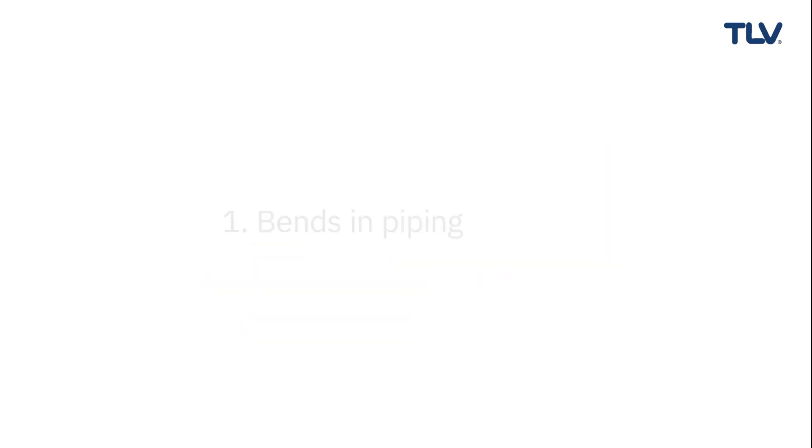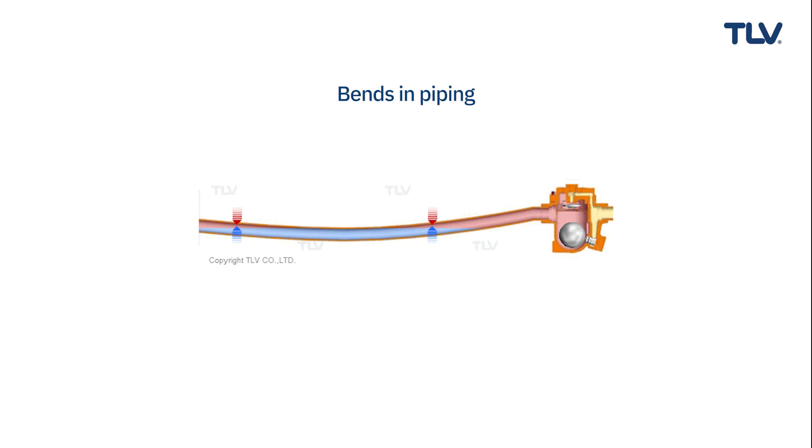There are two other issues to account for when installing trap inlet piping. One is bends in piping, and two is narrow piping. Bends in piping occur when the required piping supports are not installed. This creates curves in the piping where condensate accumulates and steam can become trapped.